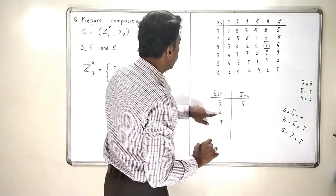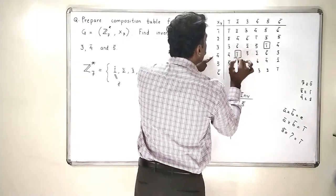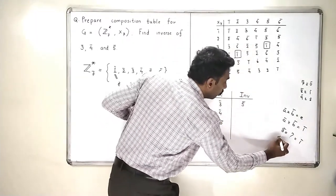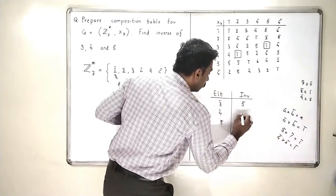If I go in 4 bar, 4 bar multiplied by 2 bar is going to give me 1 bar. So, this means inverse of 4 bar, because 4 bar into 2 bar is 1 bar, the inverse is 2 bar.